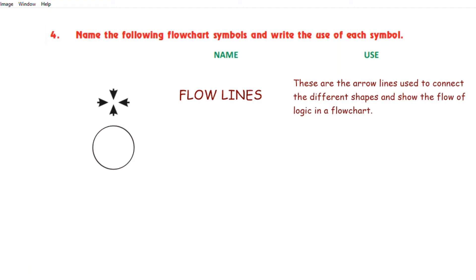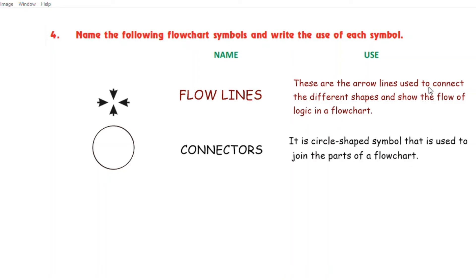The name of the last symbol is connectors and the use of this symbol is: it is a circle shaped symbol that is used to join the paths of a flowchart. Children, we have completed exercise 4.